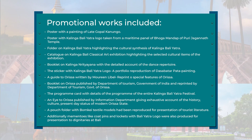Another very important publicity material was a guide to Orissa written by Maureen Leibel, which was a reprint highlighting the special features of Orissa. A booklet on Orissa published by the Department of Tourism, Government of India — and reprinted by the Department of Tourism of Orissa — was also released for the occasion. A detailed itinerary was taken out in a programme card giving the entire functioning of the programme, including the complete Kalinga Bali Yatra festival date-wise and time-wise. An 'Eye to Orissa' publication by the Information Department gave an exhaustive account of the history, culture, and present-day status of modern Orissa. The textile industry was also given a prominent place, and a pouch folder with the Bomke textile model was produced along with various tourist literatures.